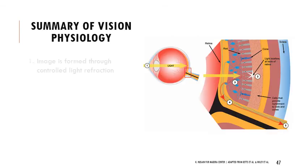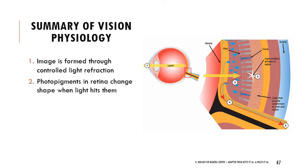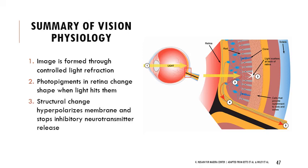To summarize: step one, the image is formed through controlled light refraction by the cornea and lens; step two, photopigments in the retina change shape when light hits them, hyperpolarizing the membrane and stopping inhibitory neurotransmitter release; and step three, the action potential is propagated along the visual pathway to the brain. That's the last lecture before the lecture exam, so please review the other lectures, work through the study guide, and let me know if you have any questions.